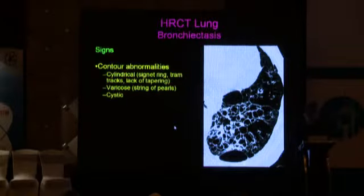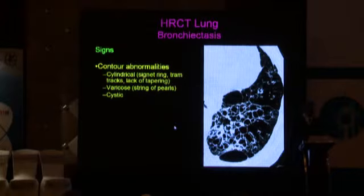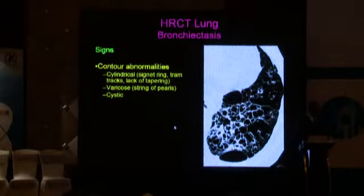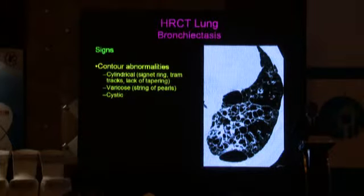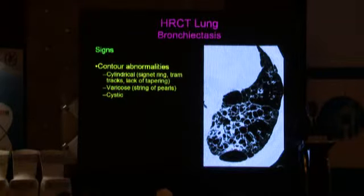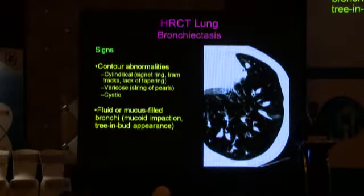In the olden days, when we were doing bronchography, we used to classify bronchiectasis into tubular, saccular, cystic, etc. This doesn't really have much clinical significance, though cystic bronchiectasis — with a bunch of grapes appearance — does lend itself to an increased incidence of superadded infection and functional disturbance. Therefore, having purely cystic bronchiectasis is perhaps not such a good thing.